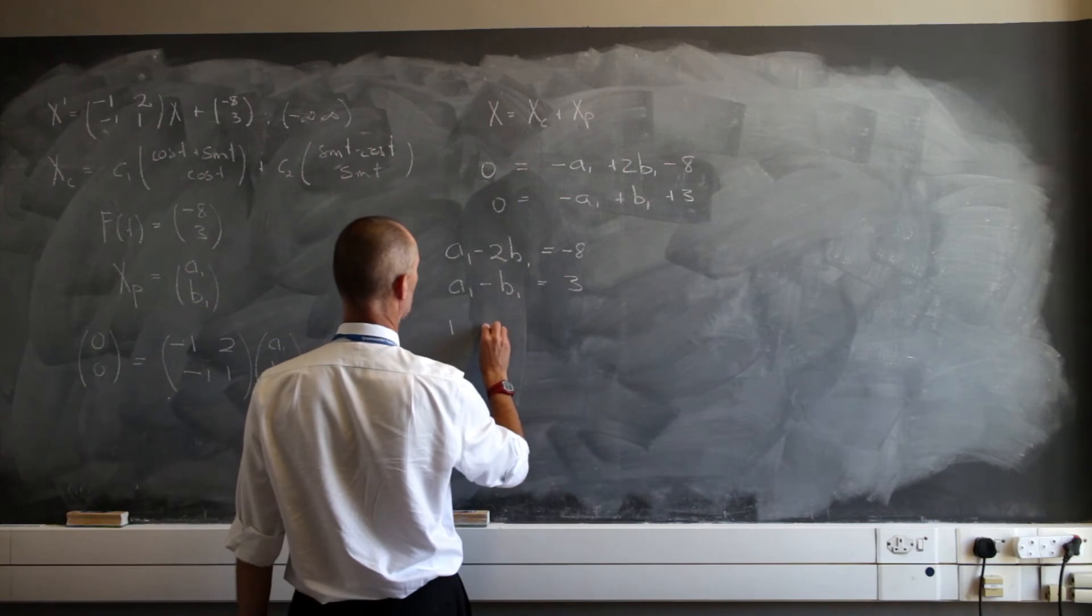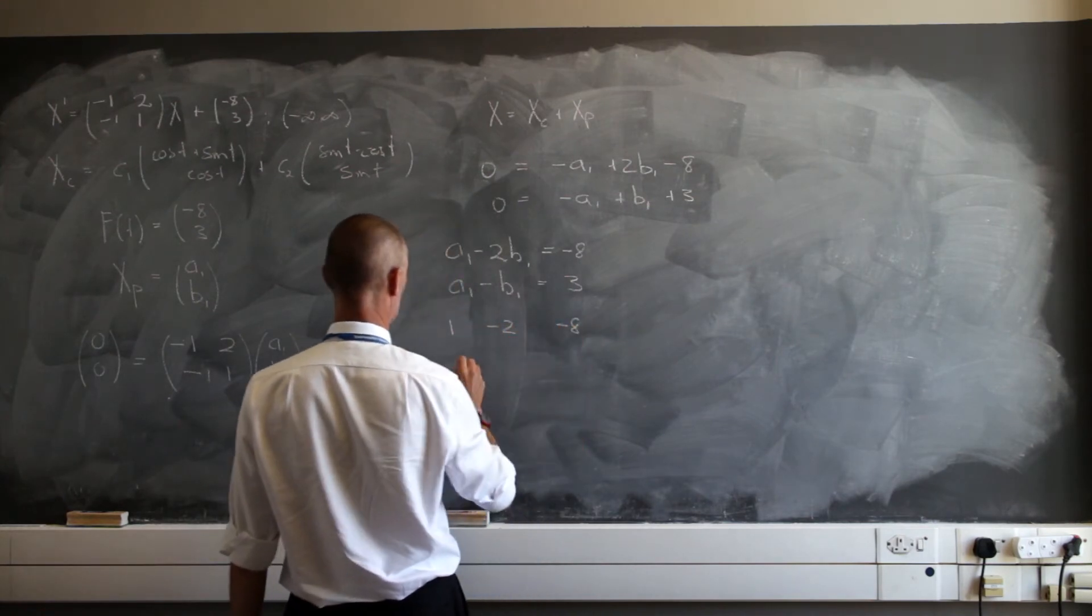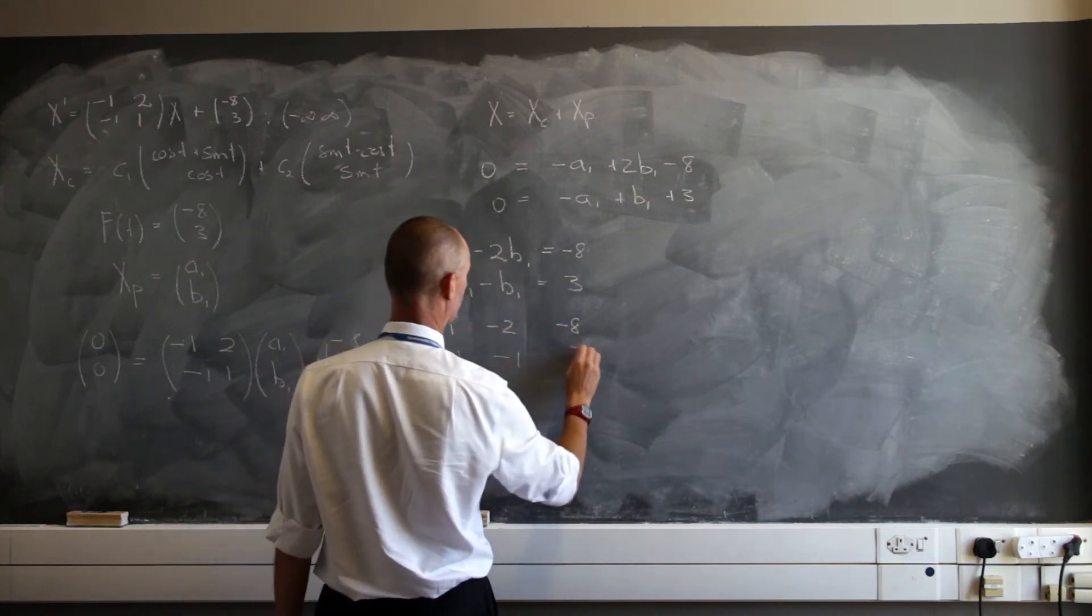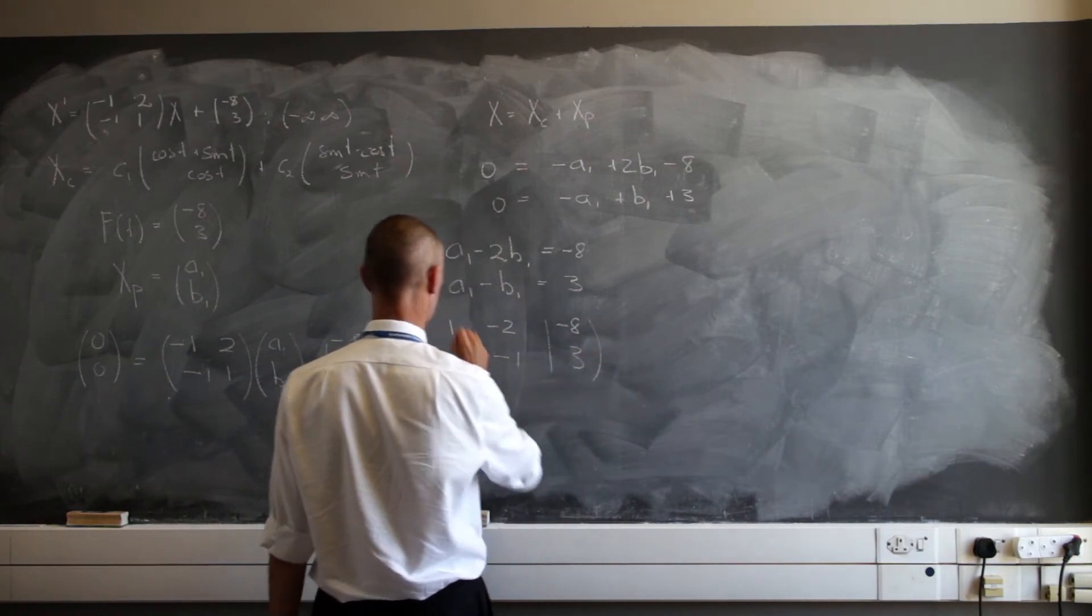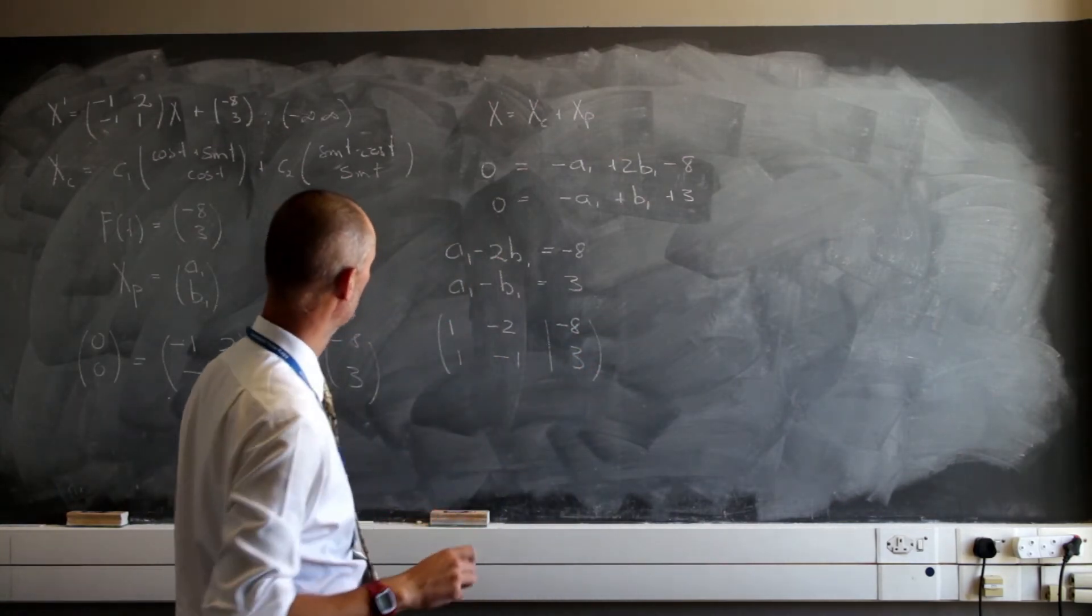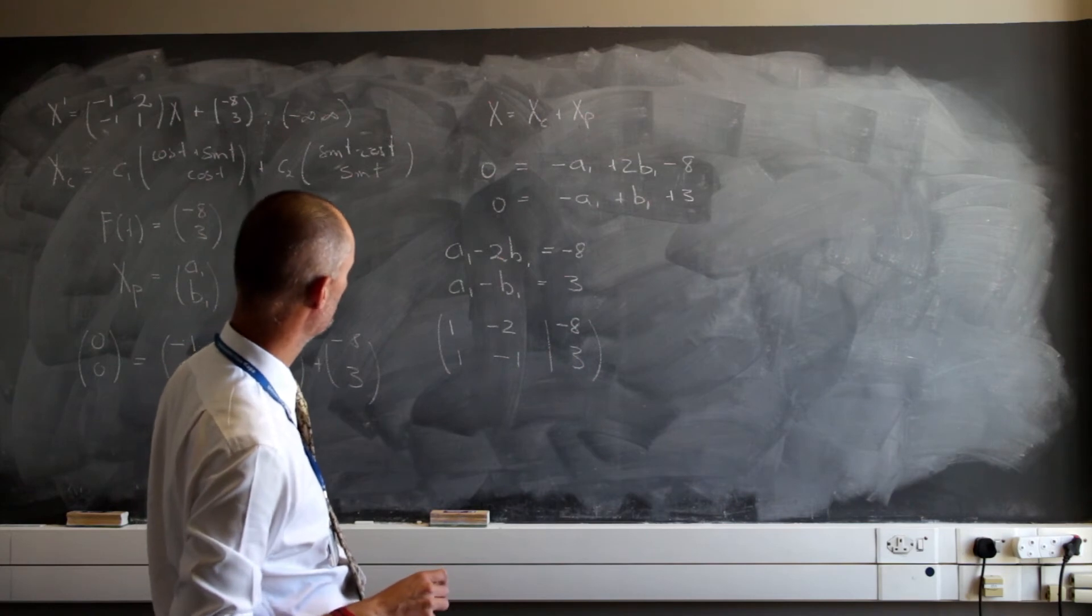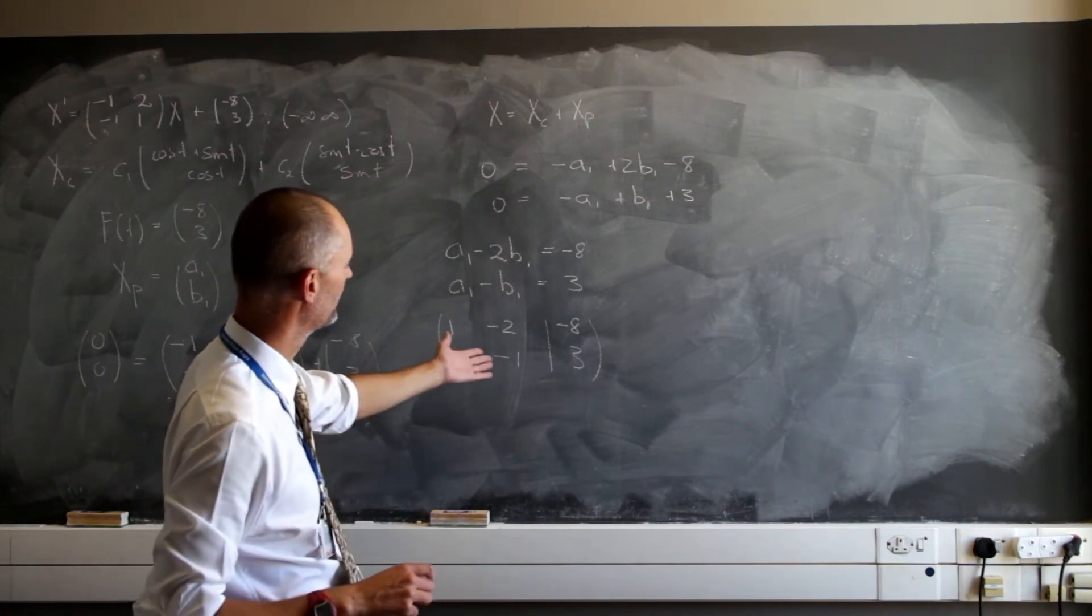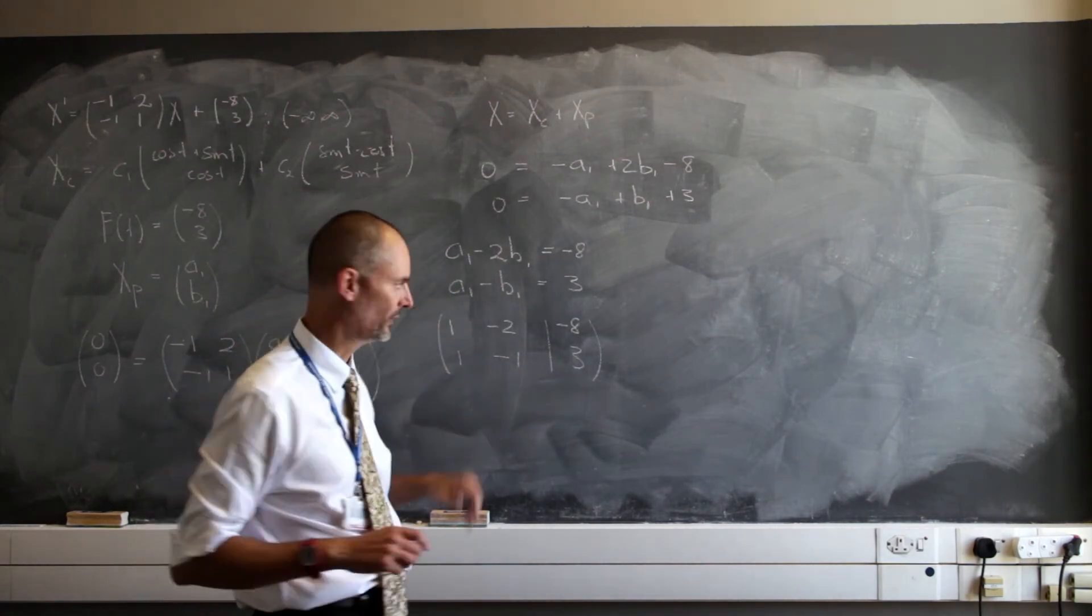Because I'll have a 1, a negative 2, and a negative 8. And I'll have a 1, a negative 1, and a 3. And that's a matrix, and all I have to do is just solve this, get it in, reduce to row echelon form.